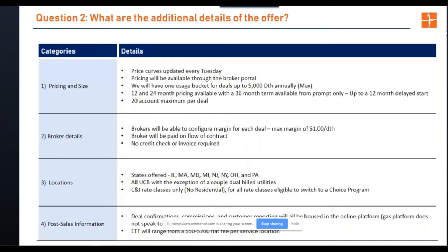The 36-month term is a nice selling point and we're hoping to expand that for other start dates beyond prompt month — maybe six months or even twelve months out. There's a 20-account maximum per deal, consistent with the DEHQ power side. Whenever you submit one, it hits all our systems to ensure the account is not already under contract, so you will not slam the customer. If you have more than 20, just break them up.